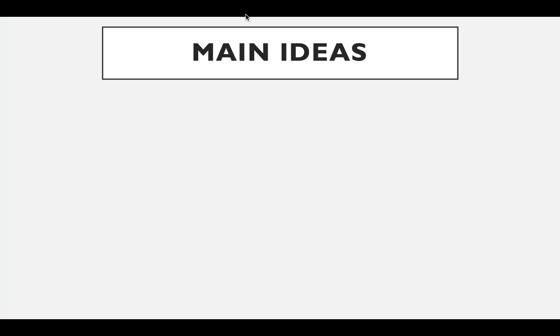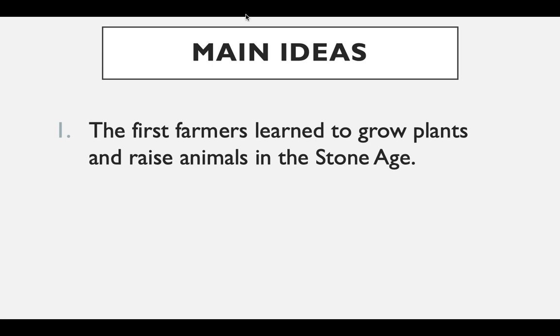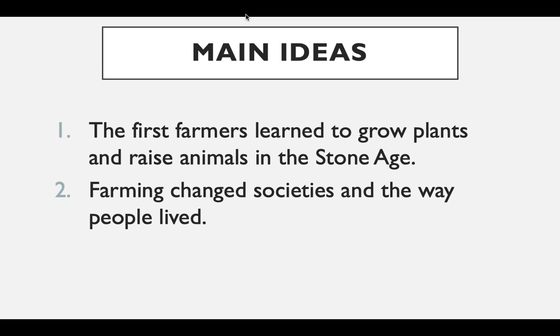Hello class, Mr. Fino here. This is Chapter 2, Section 3: Beginnings of Agriculture. We have two main ideas here in this section. The first is that the first farmers learned to grow plants and raise animals in the Stone Age. And the second is that farming changed societies and the way people lived.